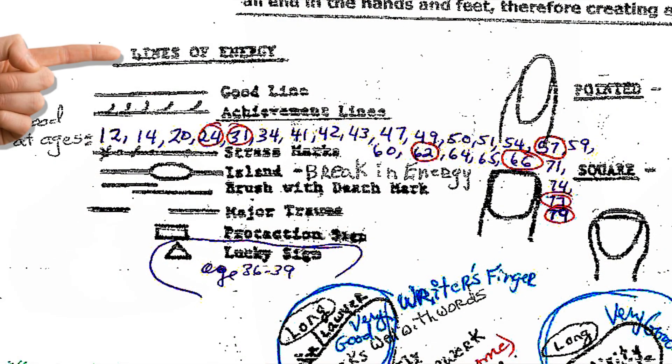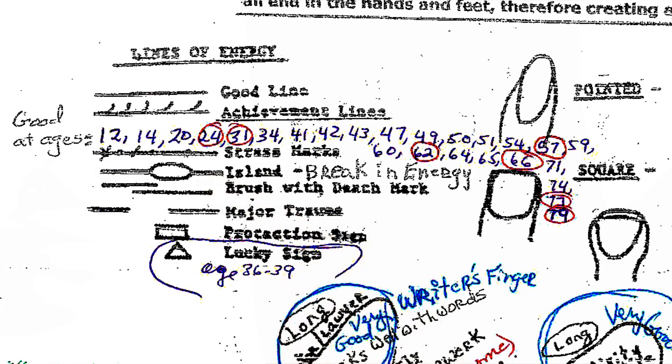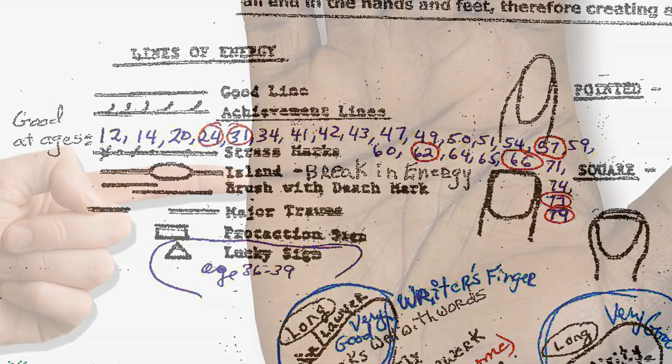Look up there in the upper left hand corner where it says lines of energy and run your finger down where it says island, I-S-L-A-N-D. You see any of those little ovals or sometimes little triangles that are kind of rounded on the edges or little circles.